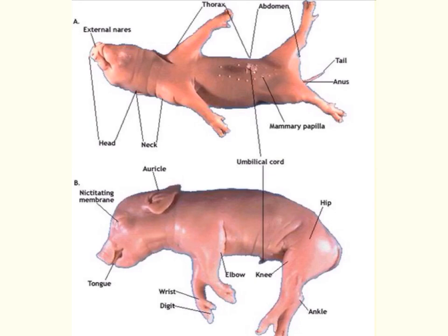Now that you have placed your pig on its dorsal side, you are able to view the structures on the ventral surface or belly side. You will be able to identify the umbilical cord that protrudes from the ventral side of the abdomen. You will also see the mammillary papilla around the abdominal region near the umbilical cord. Both sexes have these, but in the female they will develop into the mammillary glands and will be used to produce milk for young offspring.